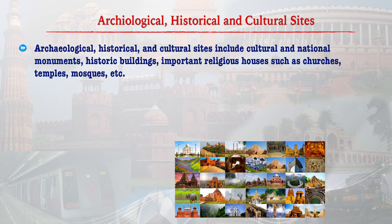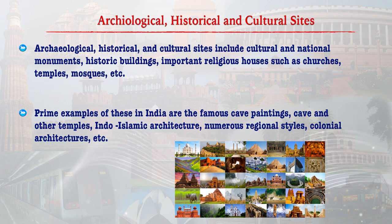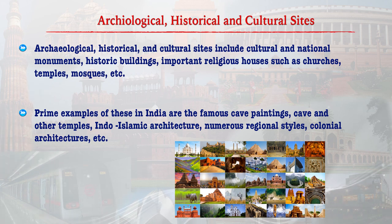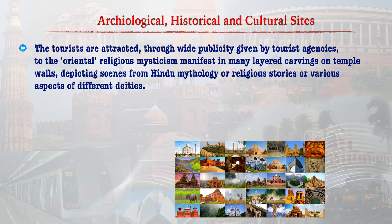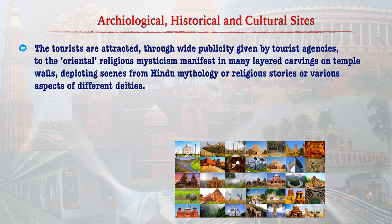The next subtopic is few facts about archaeological, historical and cultural sites in India. Archaeological, historical and cultural sites include cultural and national monuments, historic buildings, important religious houses such as churches, temples, mosques, etc. Prime examples in India are the famous cave paintings, cave and other temples, Indo-Islamic architecture, numerous religious styles, and colonial architectures. Tourists are attracted through wide publicity given by tourist agencies to the oriental religious mysticism manifest in intricate carvings on temple walls depicting scenes from Hindu mythology or various aspects of different deities.